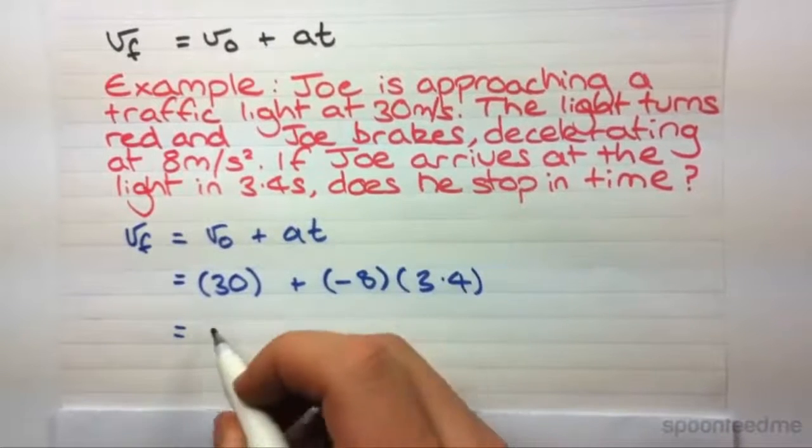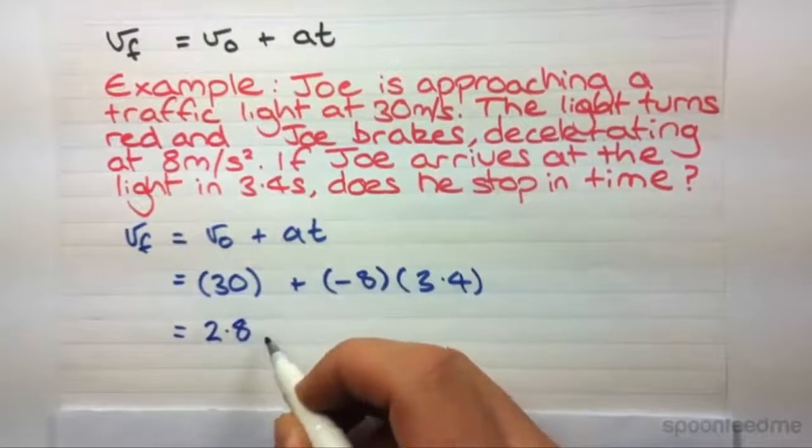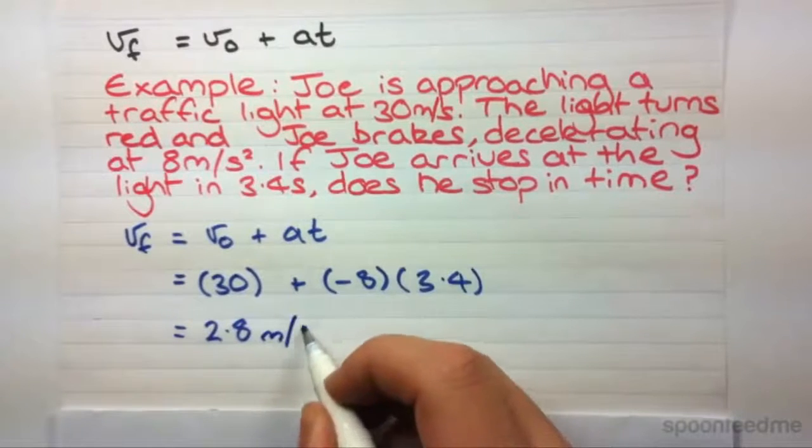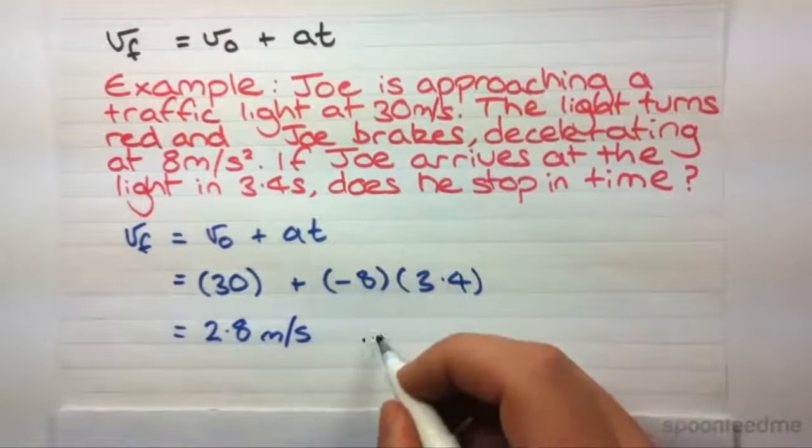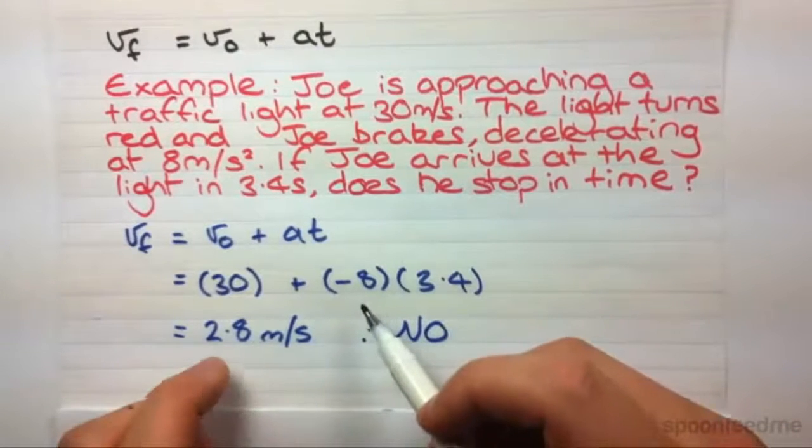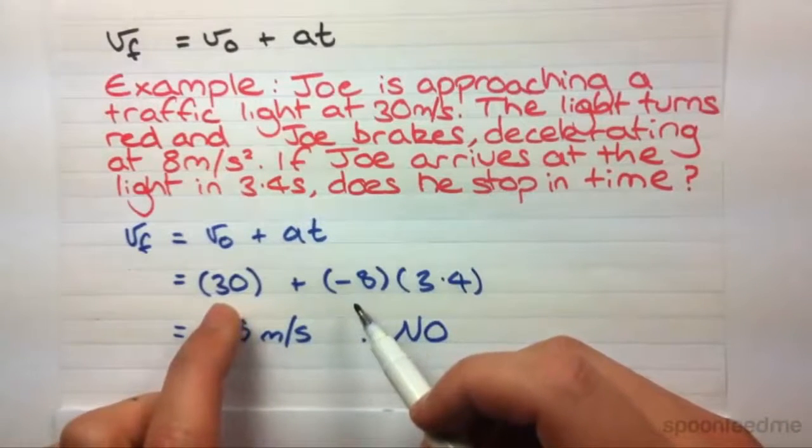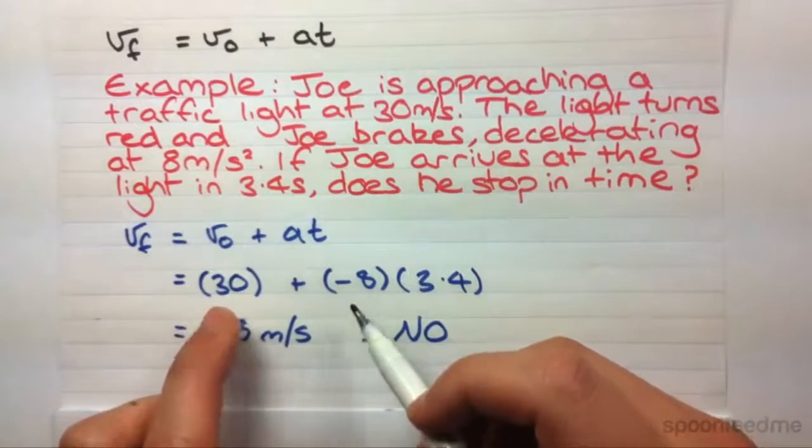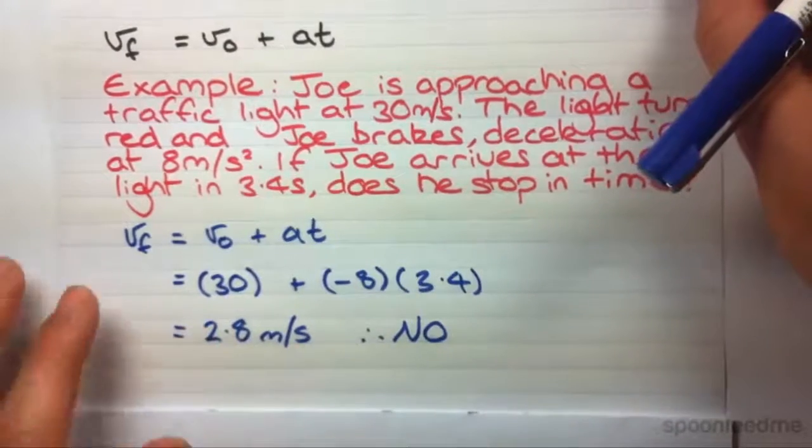Chuck that into the calculator. End up with when he reaches the light, he's still going at 2.8 metres per second. Does he stop in time? No. So, really important when vectors are going in opposite directions, such as acceleration and velocity, we've got to reflect that in the math that we're doing.